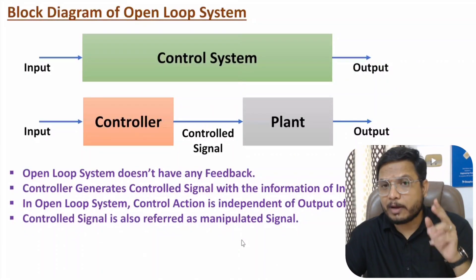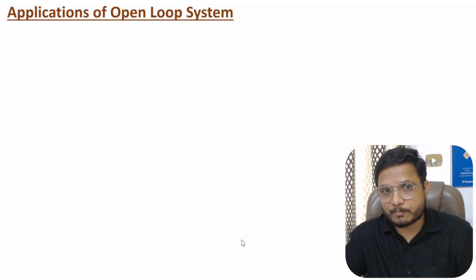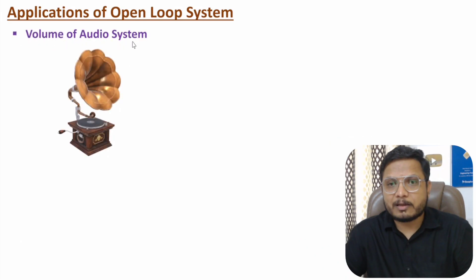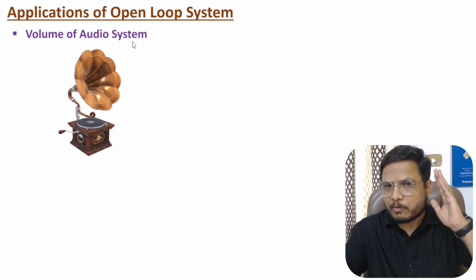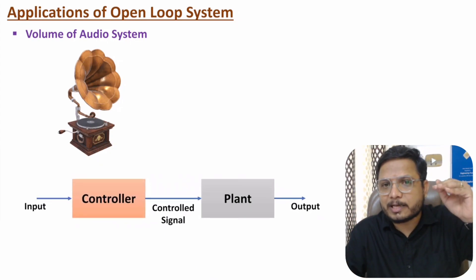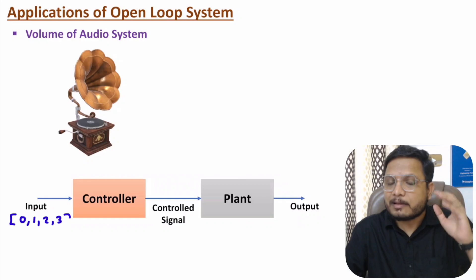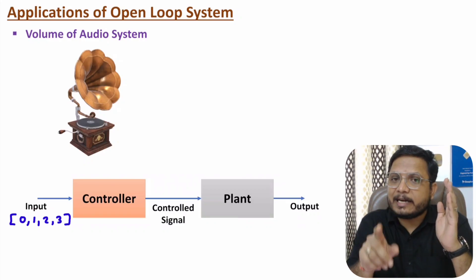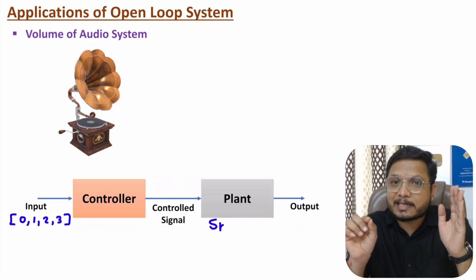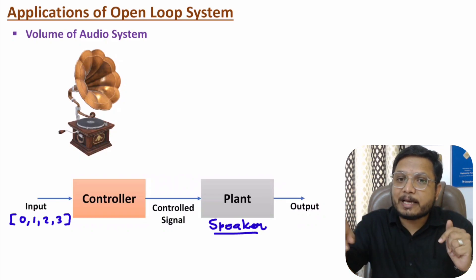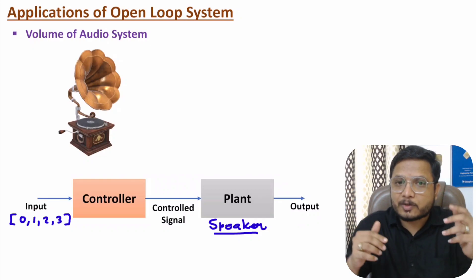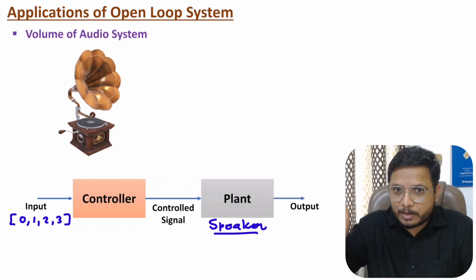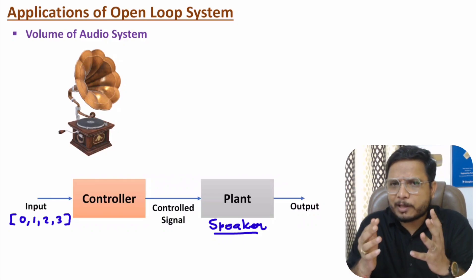Now I will explain the applications of open loop system. One simple application is volume control of an audio system. Here the input — say 0, 1, 2, 3, 4, 5 — is given to the controller. The controller generates a controlled signal, which is given to the speaker, that is the plant. The speaker generates sound. By controlling the volume from 1 to 5, we can control the generation of sound. That is an open loop system example.